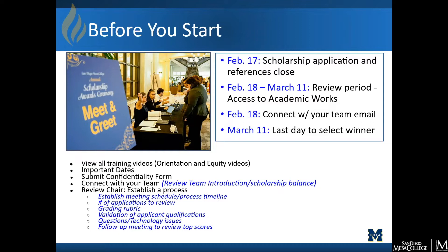Also, some important dates to be mindful of. February 17th is when the scholarship application and references are closed to students. February 18th to March 11th is when you'll have access to our Academic Works system — this will be your review period. On February 18th, you will also get an email indicating who will be on your review team as well as your scholarship balance. As a review chair, this is a very important time to begin establishing a process on how to approach this work.